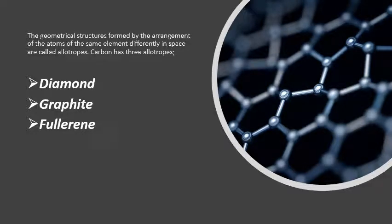The geometrical structures formed by the arrangement of the atoms of the same element differently in space are called allotropes. Carbon has three allotropes: diamond, graphite, and fullerene.